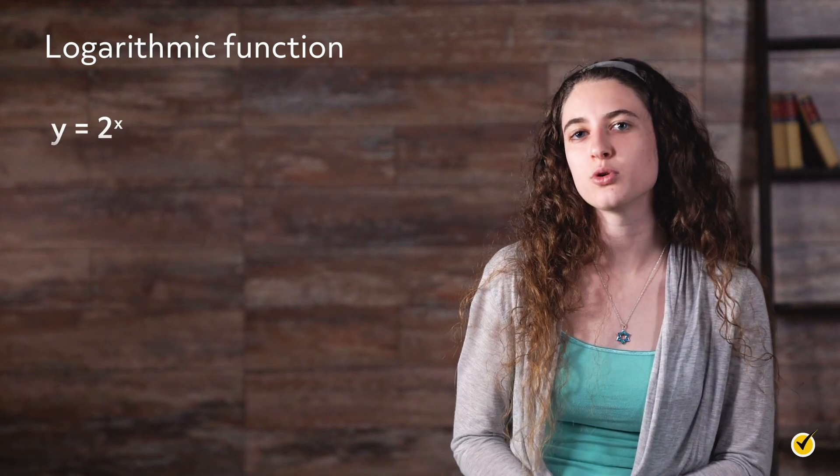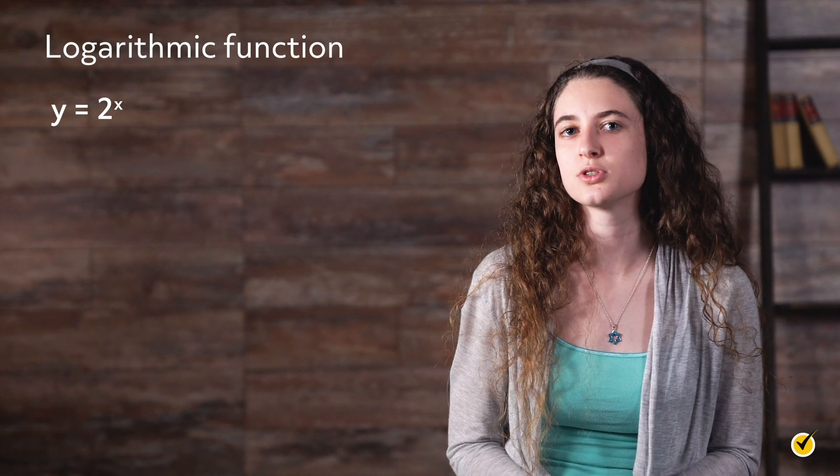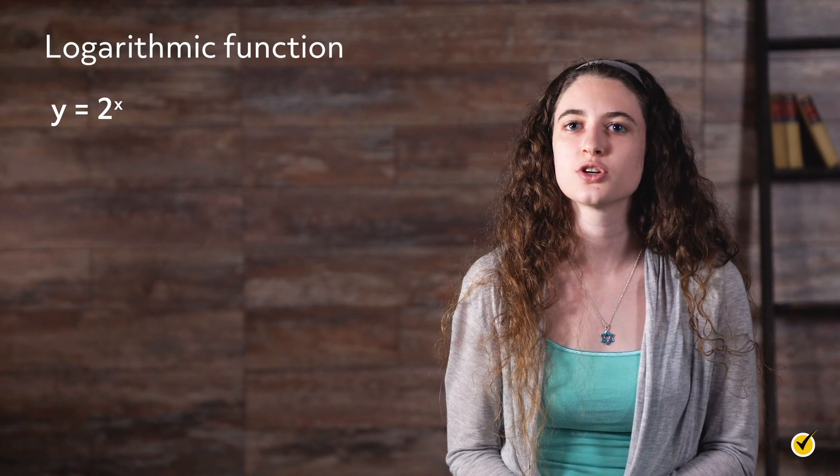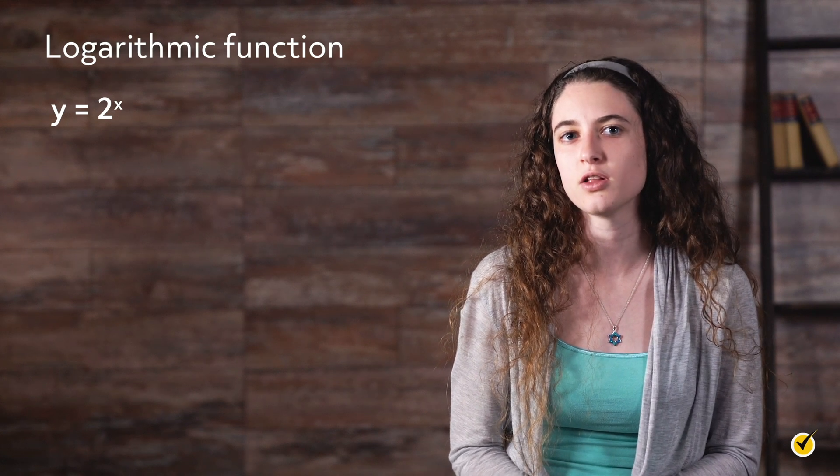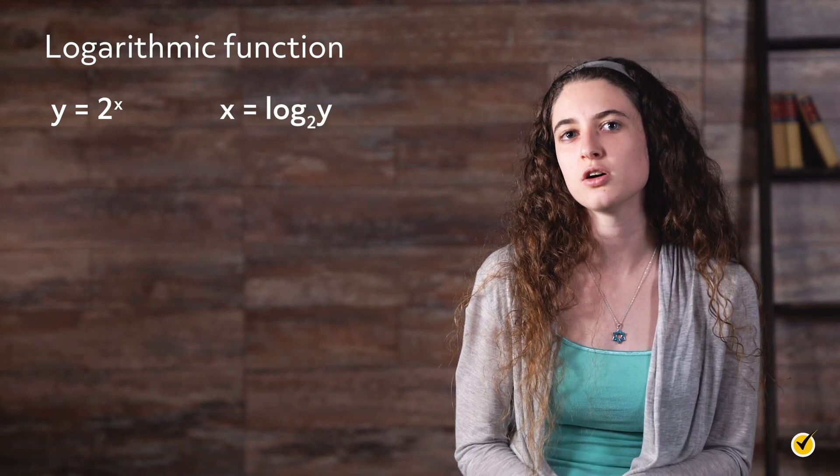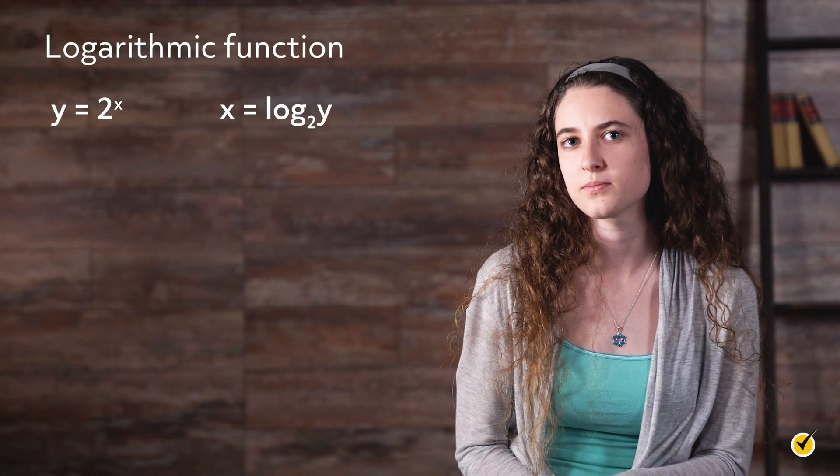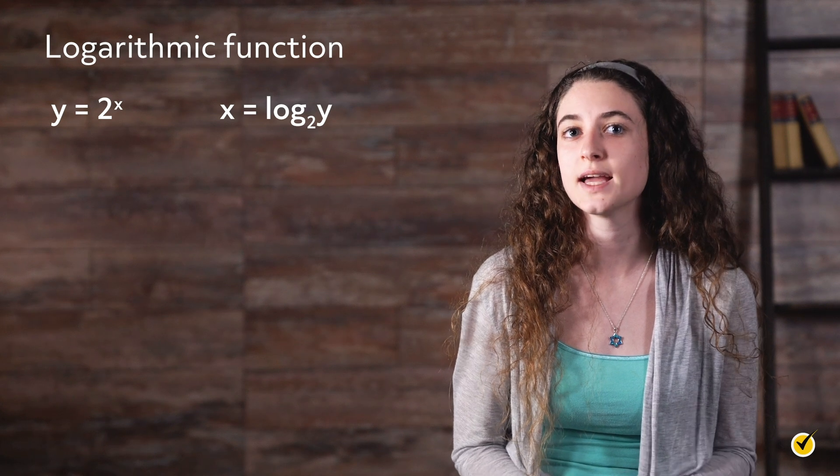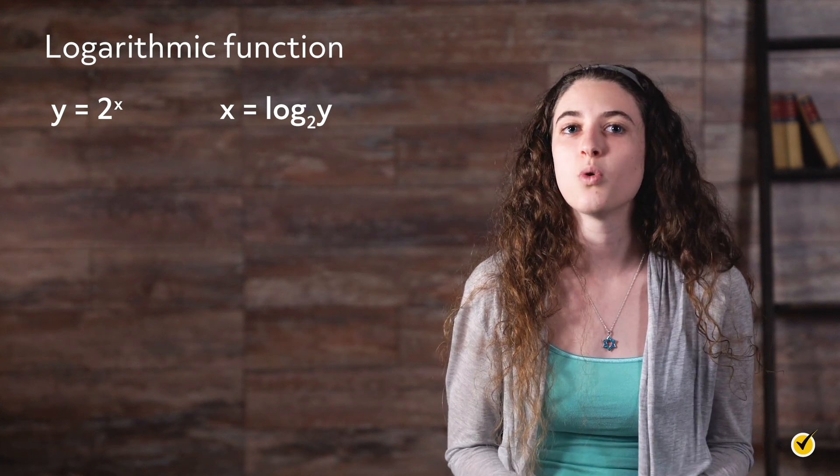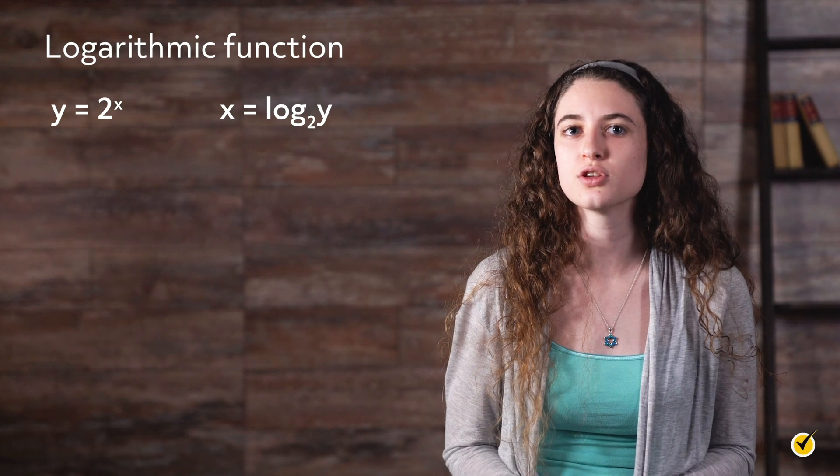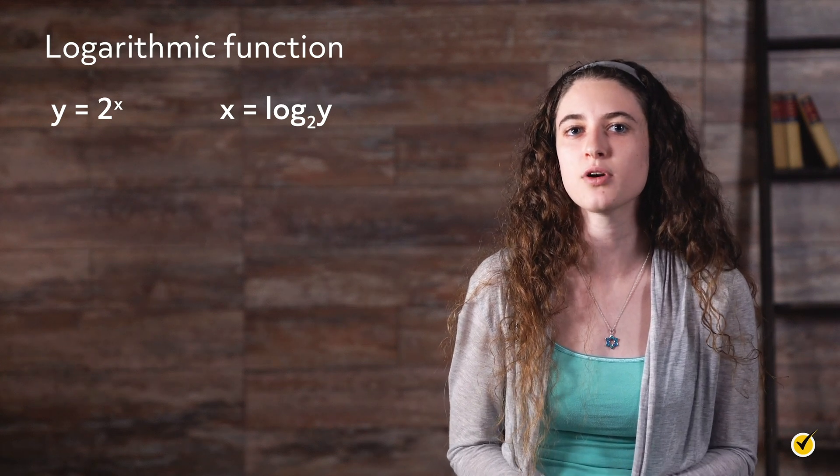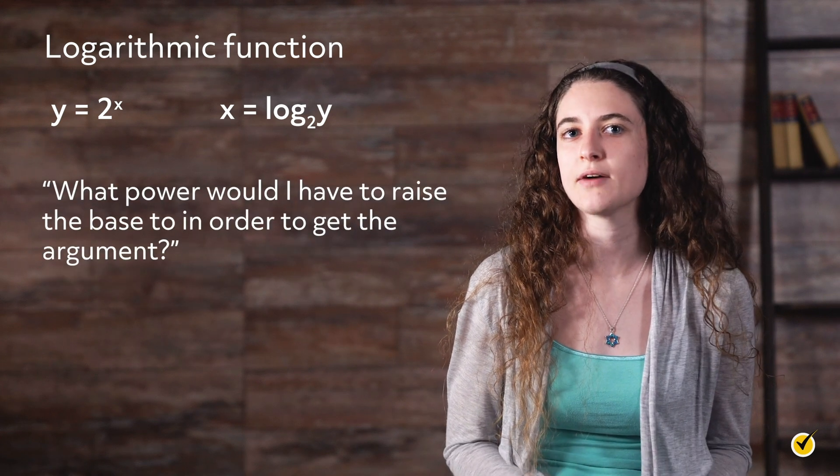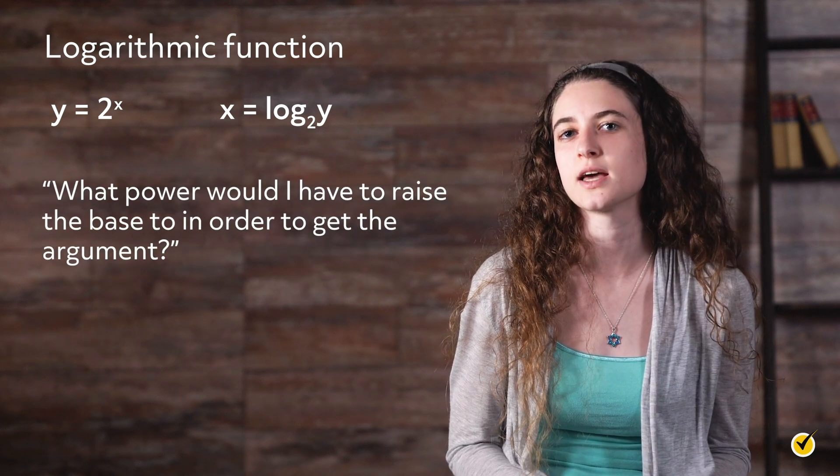As stated previously, y equals 2 to the x has a base equals 2 and an exponent of x. This exponential equation can be converted to a logarithmic function as follows: x equals log base 2 times y. A log function names the base of the function as a subscript of the log, in this case 2. The y of the log function is called the argument, and the solution to a log function is the power of the exponential function. It is often helpful to ask yourself, what power would I have to raise the base to in order to get the argument?